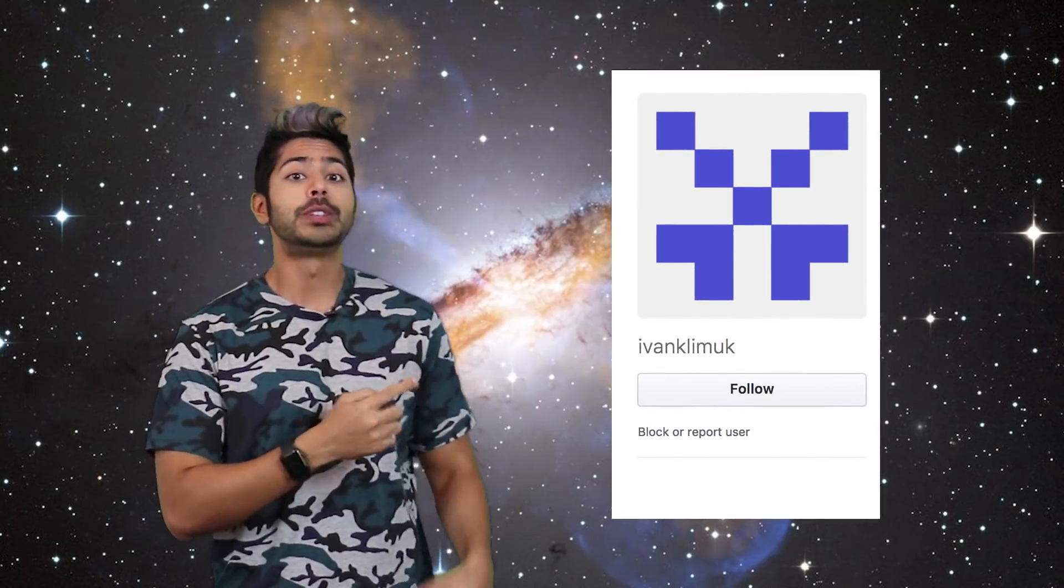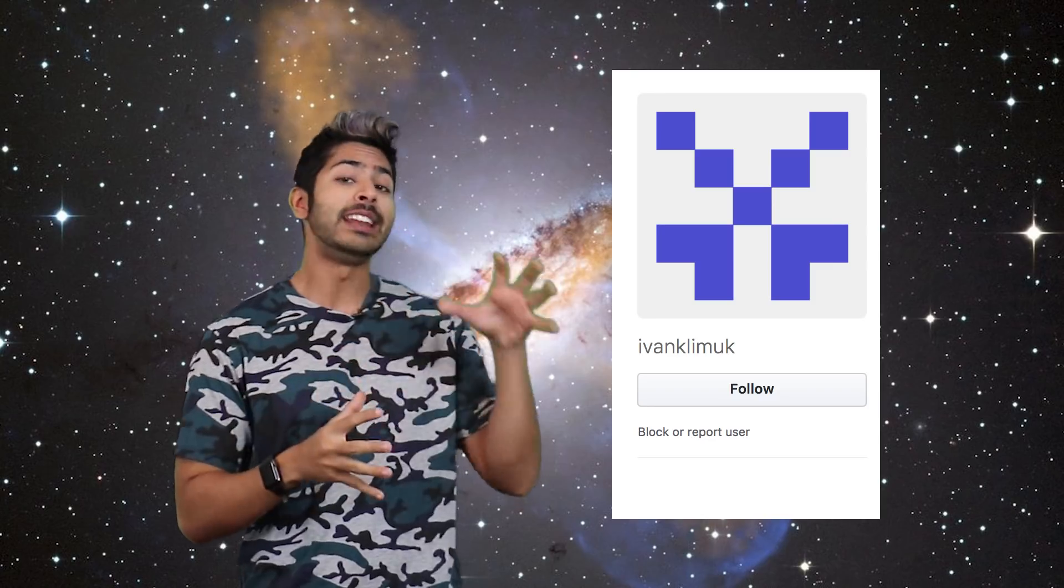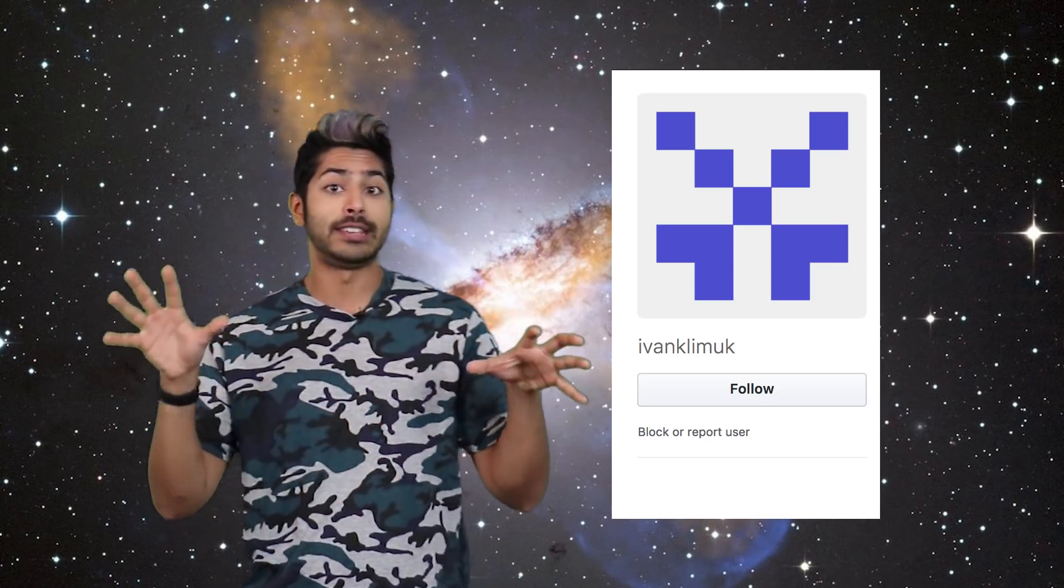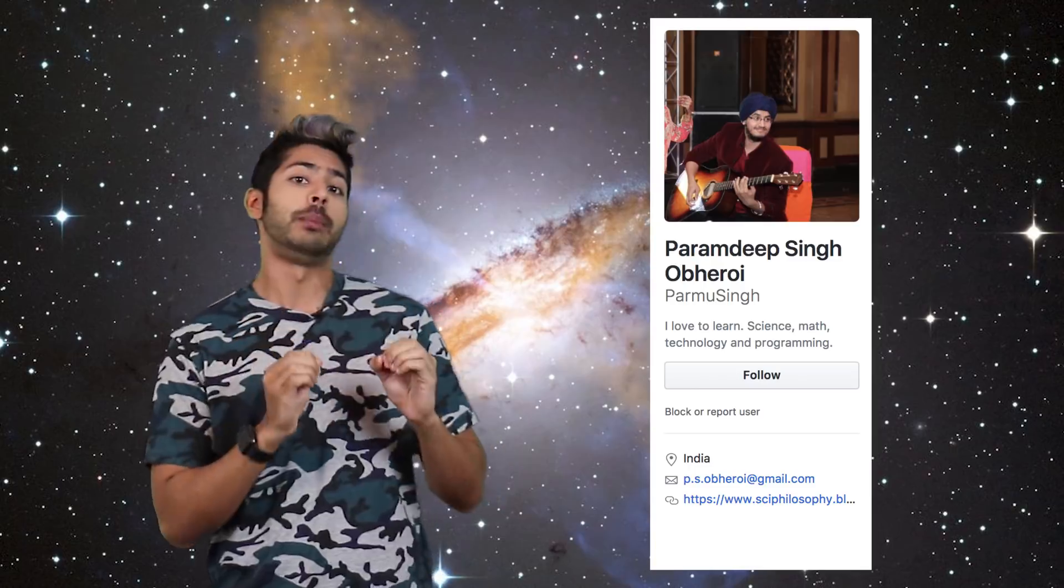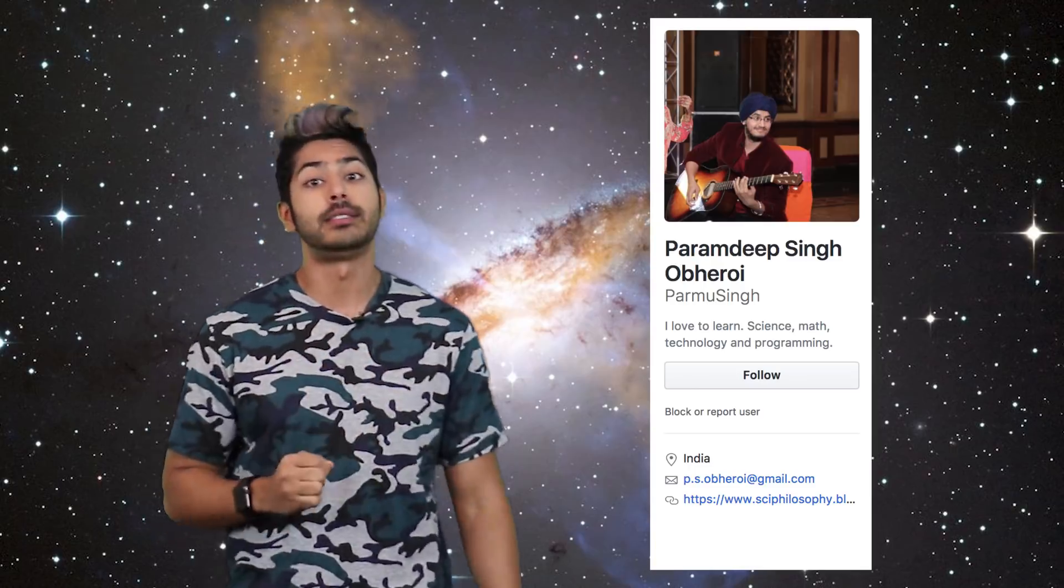Last week's coding challenge winner is Ivan Klimuk who used an autoencoder to convert DNA sequences into RNA sequences. This is such a cool application. Great job Ivan. And the runner-up is Paramdeep Singh Oberoi who created a well-documented autoencoder on the MNIST dataset.